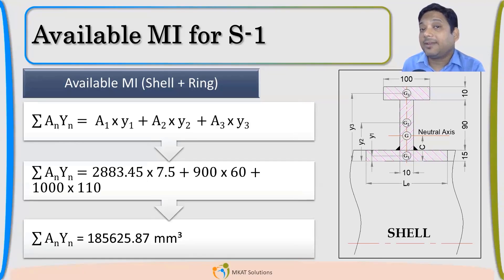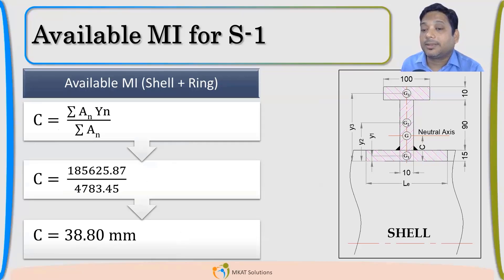Summation of AN, Yn, first moment of inertia. So, A1 into Y1, A2 into Y2, this will give me the summation of AN, Yn. So, this is what AN, Yn I got. Then, I will be able to find the centroid. So, once I divide the summation of AN, Yn divided by the total area, we will get the centroid of the combined section.